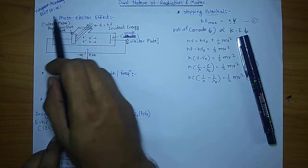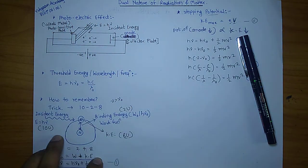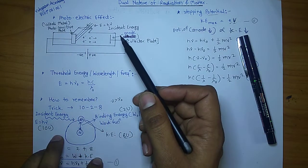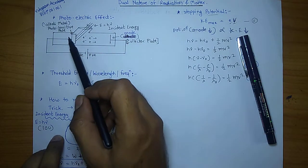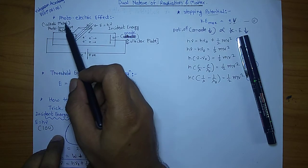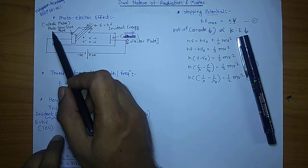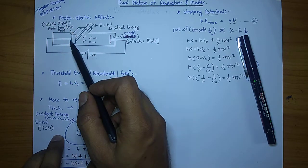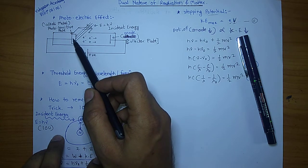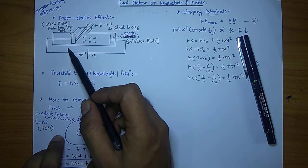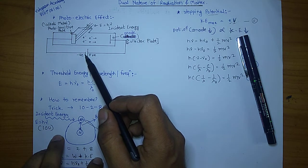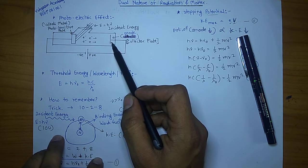Now this is a diagrammatic representation. Question is, will this effect happen for each and every material? Answer is no. For that you require some certain material, and that is nothing but alkali metal. It is also called a photosensitive plate because it senses incident photons, as well as it is also named cathode, and cathode is connected to the negative terminal of a battery, whereas anode is connected to the positive terminal.